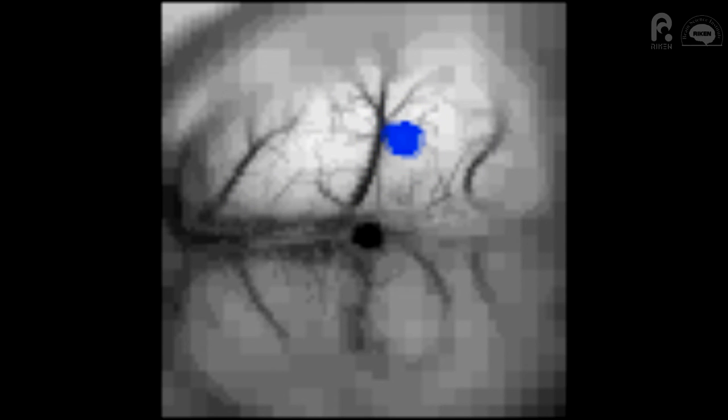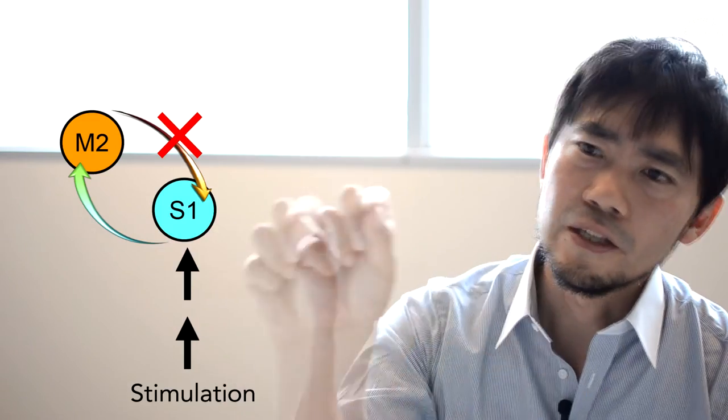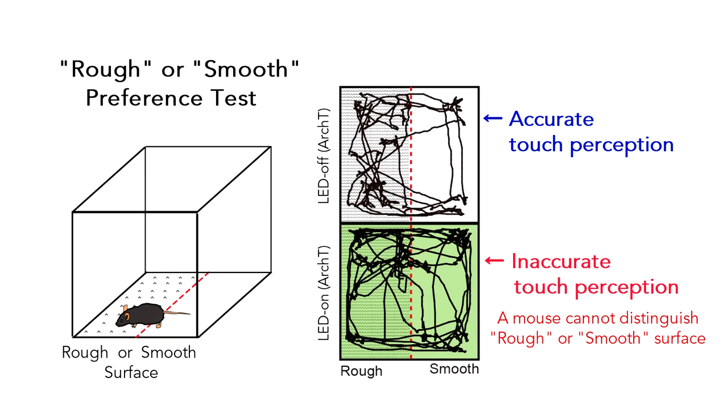When we inactivate feedback signals in the reverberating circuit, then the mouse cannot have accurate sensory perception of touch.